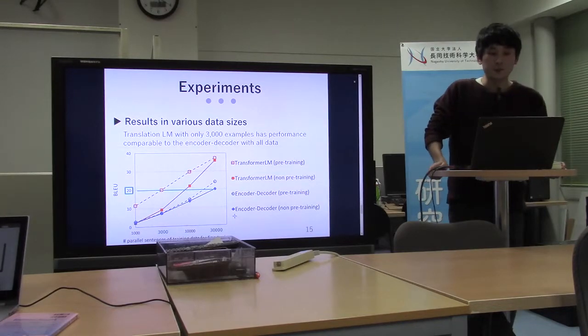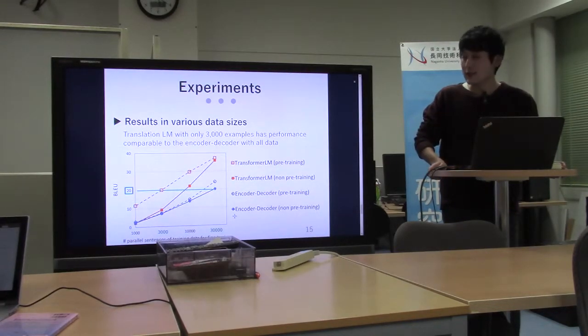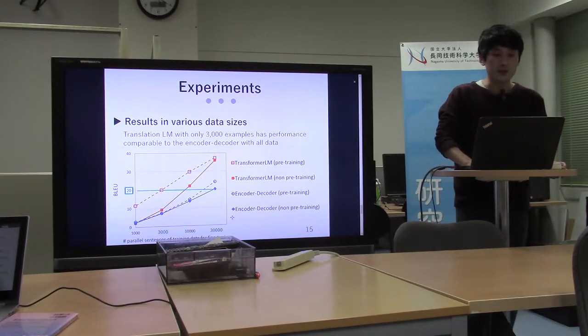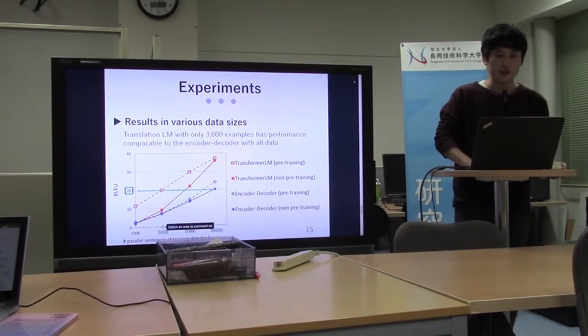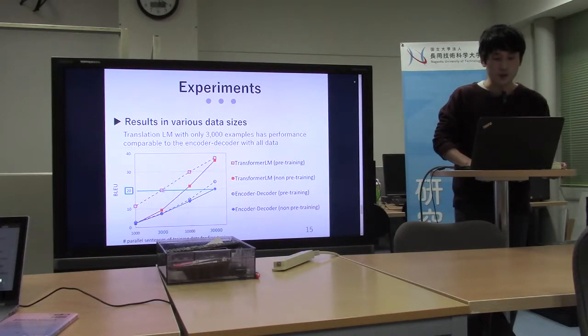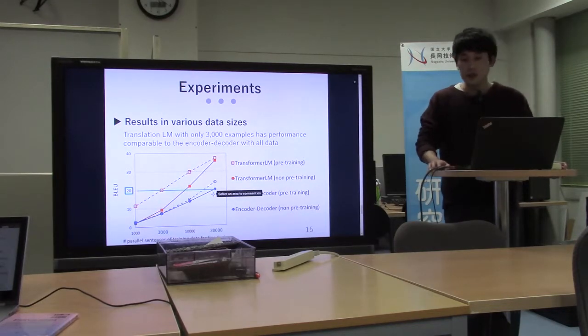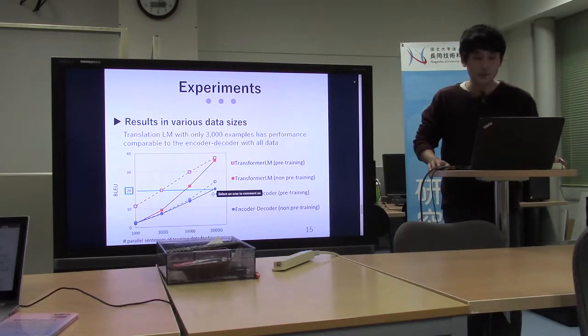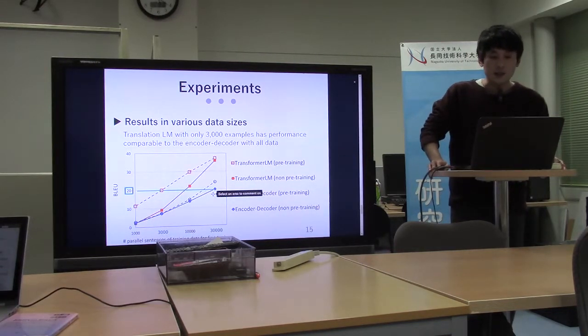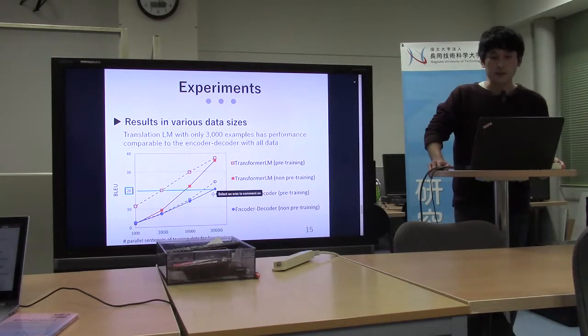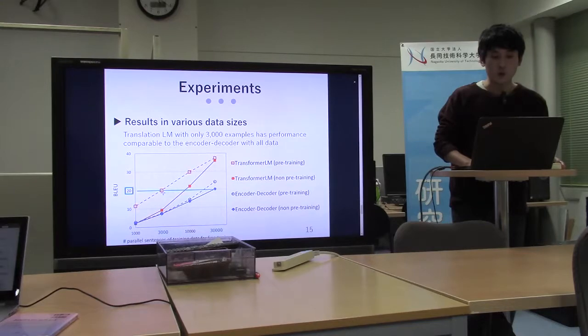Finally, we conducted an experiment on various data sizes. As you can see, a pre-trained translation language model with only 3,000 examples has performance comparable to the encoder-decoder model with all of the data. This shows the translation language model has high performance despite the extremely low resource setting.